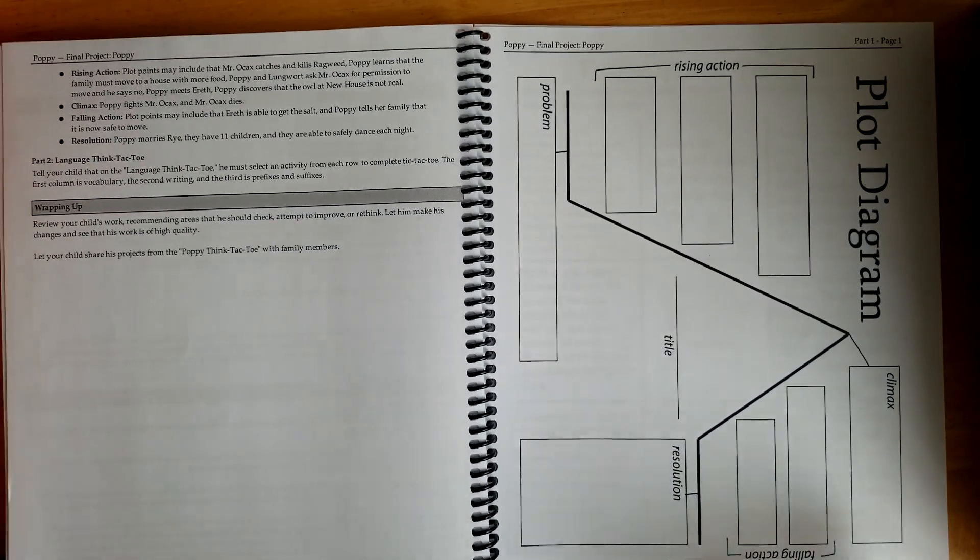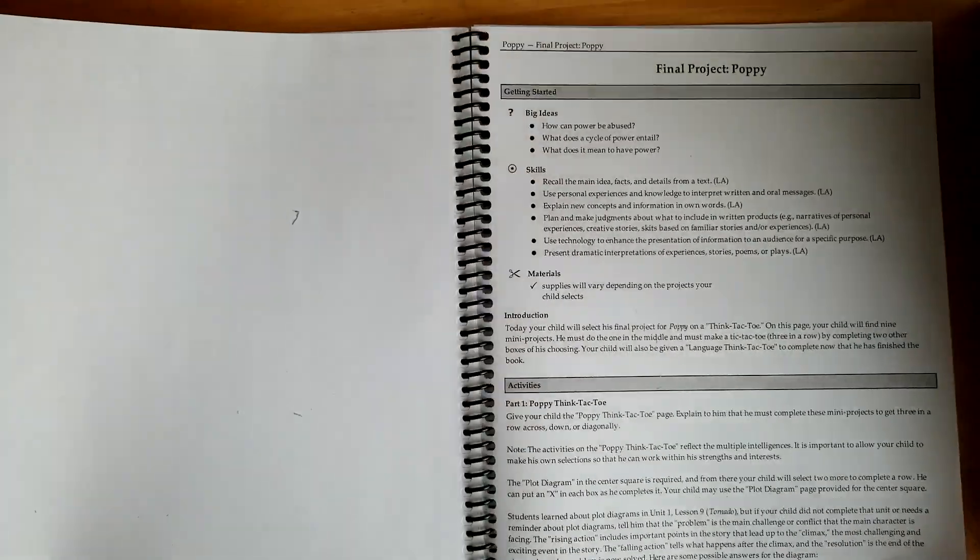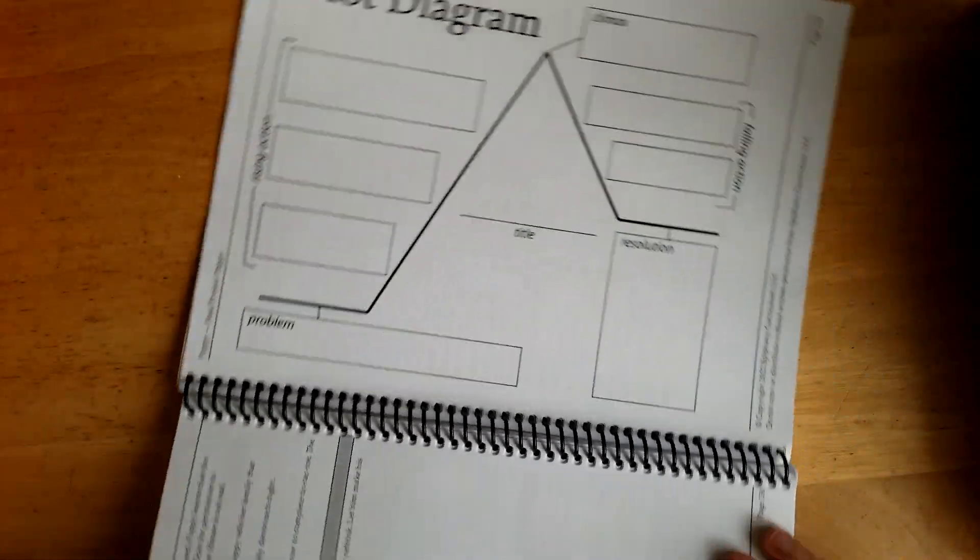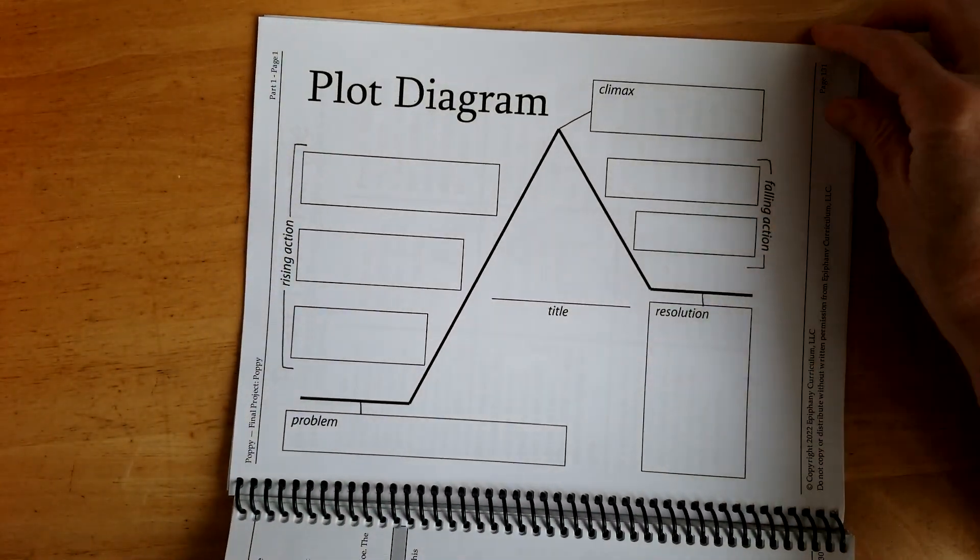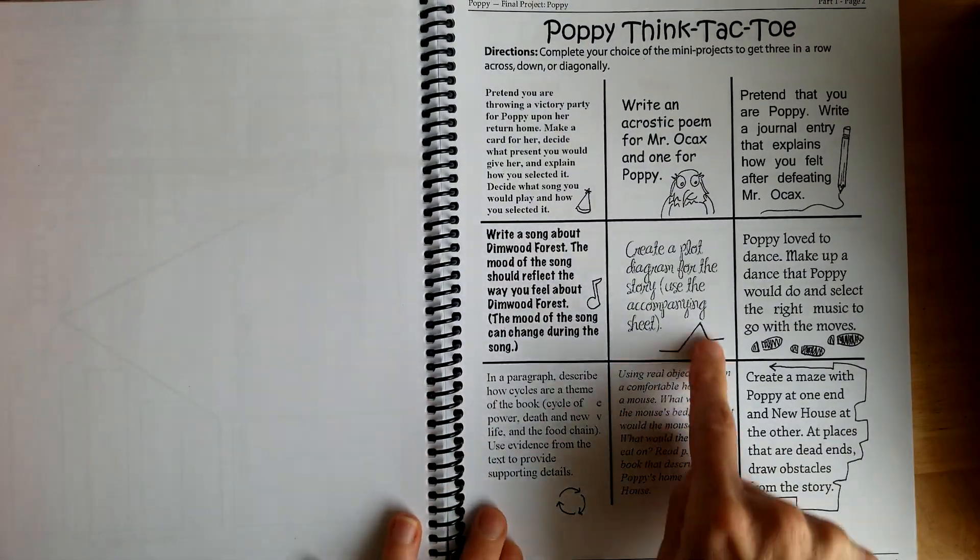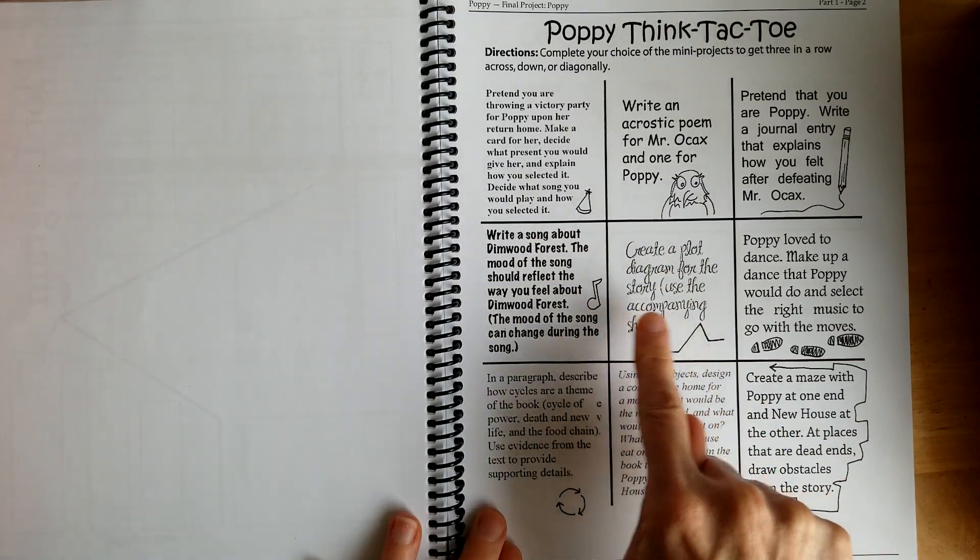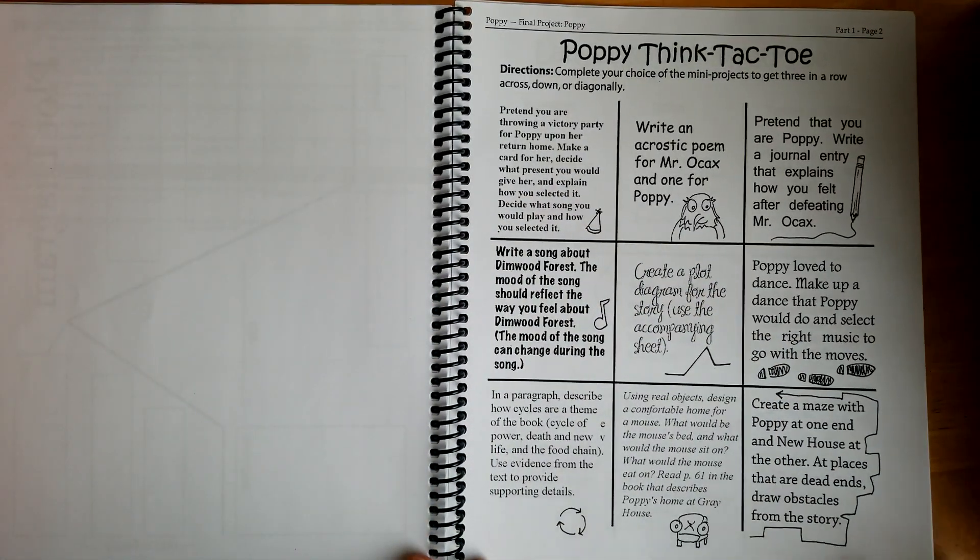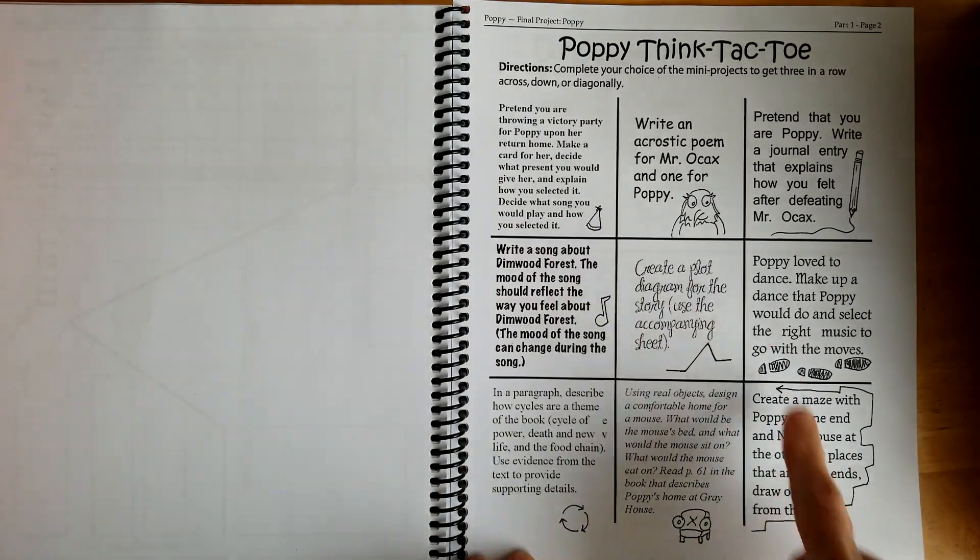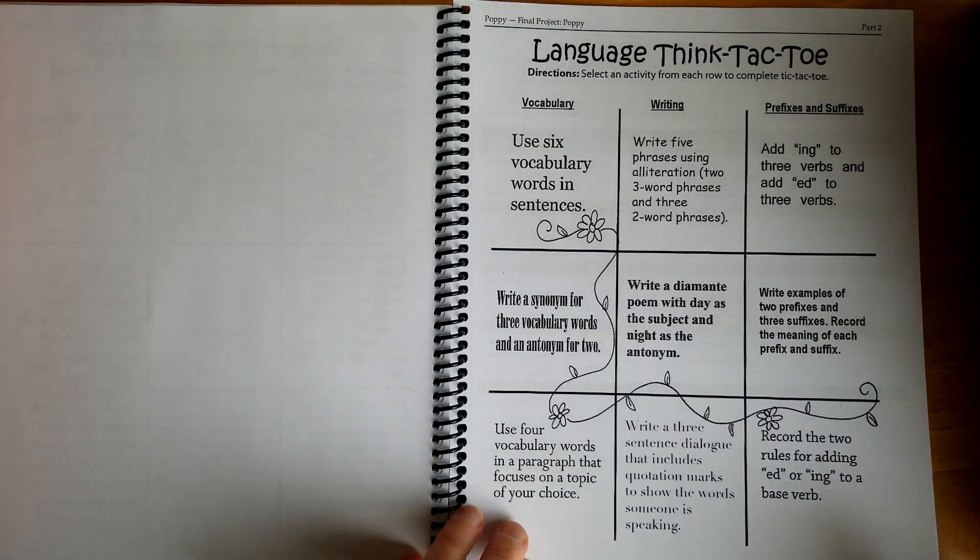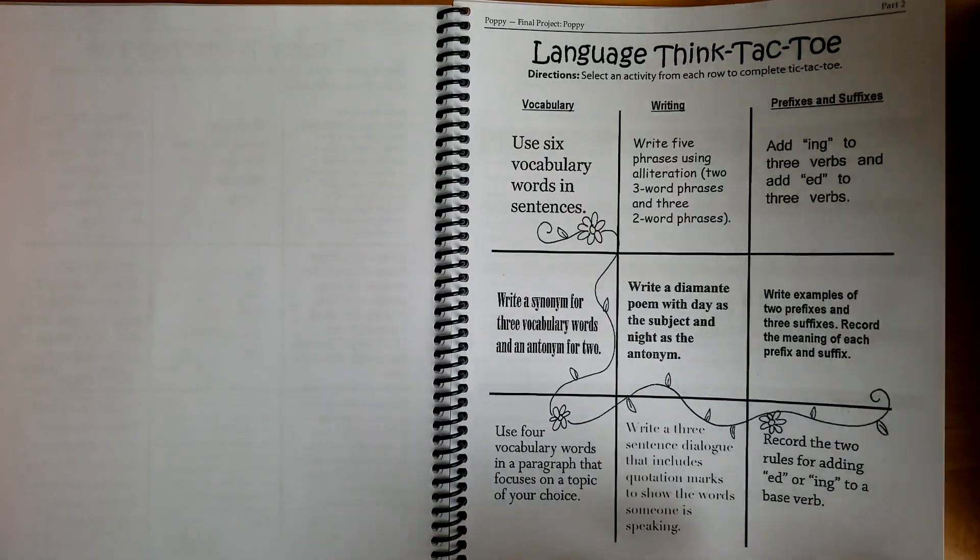Actually, maybe I went too fast there. This is the final project. There's the plot diagram that we did. And then this was fun. She had to do this one in the center and then got to pick one of these other ones, one of these other projects to do, or two more actually to make a tic-tac-toe. I think we only ended up doing two.